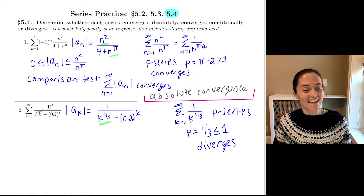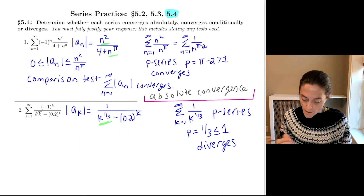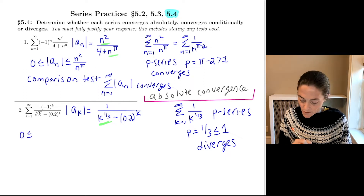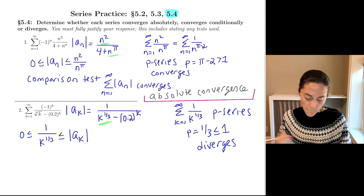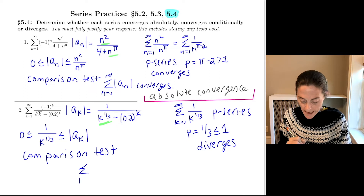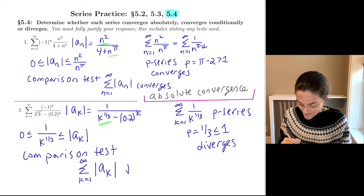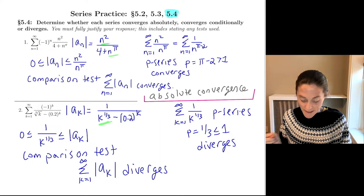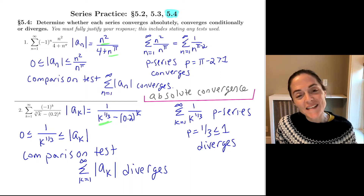I want to use comparison again. The terms of my actual series have a smaller denominator, which means a bigger fraction, so the inequality goes this way: zero is less than or equal to 1 over k to the one-third power, which is less than or equal to the absolute value of a_k. By the comparison test, the sum from k equals 1 to infinity of the absolute value of a_k diverges. Term by term, the absolute value of a_k is bigger than the terms of a divergent p-series.